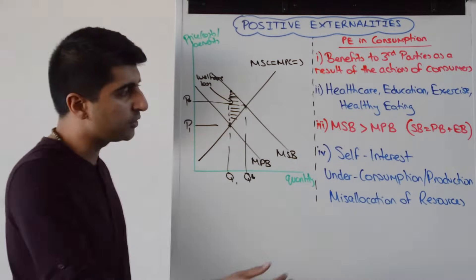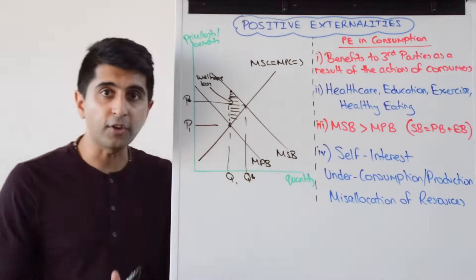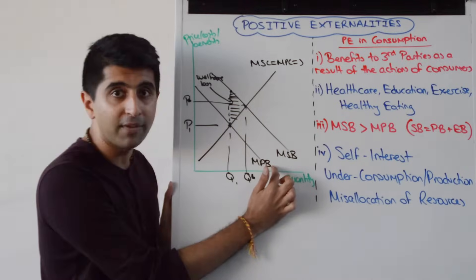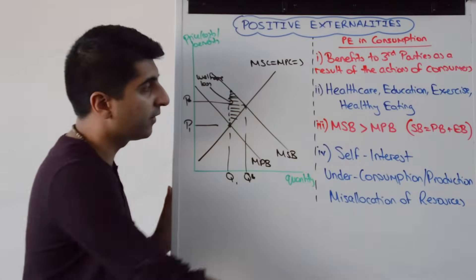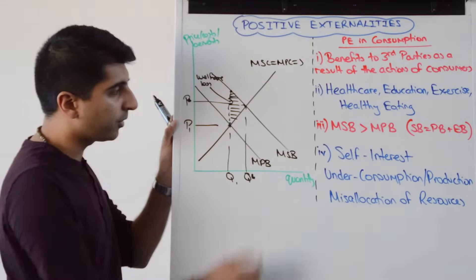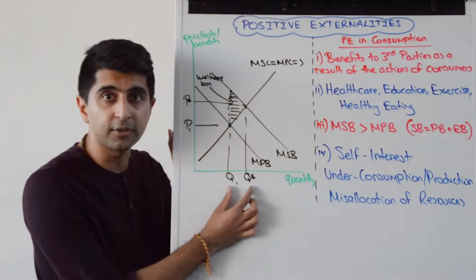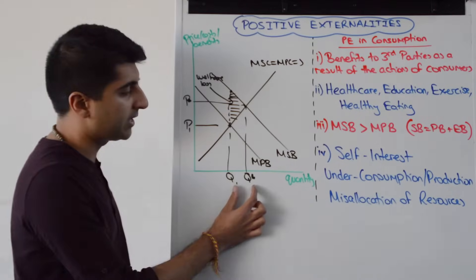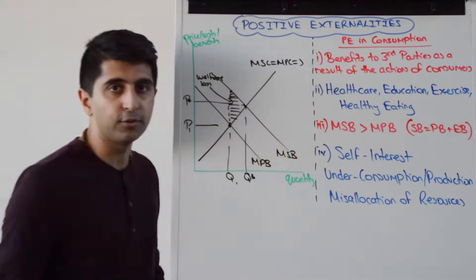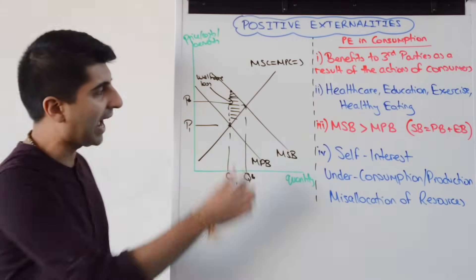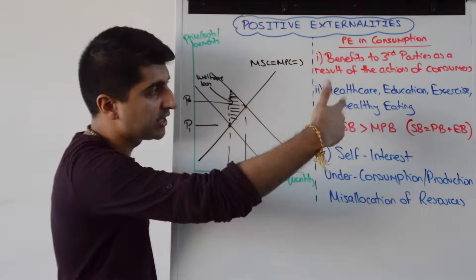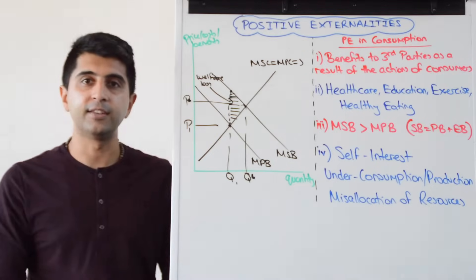In terms of analysis, you would say that individual consumers are ignoring the full social benefit of their actions. They're only considering their private benefits because of self-interest — they're ignoring these external benefits. As a result, the market allocates scarce resources at the private optimum, which means there is an under-consumption and under-production compared to what we want in society, compared to the social optimum. That results in a misallocation of resources, allocative inefficiency and this welfare loss — too few resources being allocated to this market, whether it's healthcare or education or whatever, that is socially desirable.